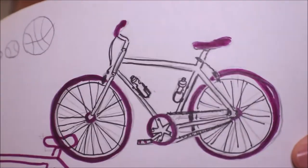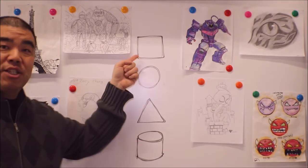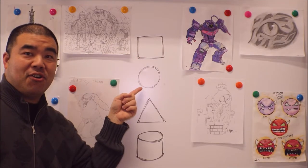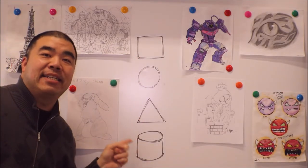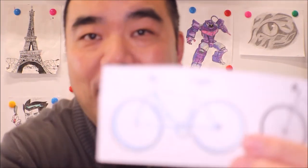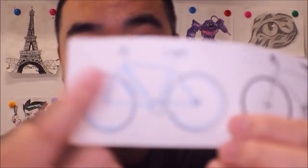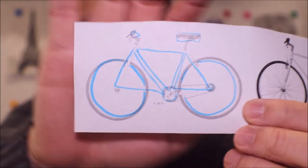Thanks for tuning in to another episode of the World of War Art. Today I'm going to show you guys how to draw a bicycle just like that. If you haven't drawn a bicycle before or don't know how to draw bicycles, I'm going to show you how to draw with basic shapes — a square, a circle, a triangle, and a cylinder — and how to break that down.